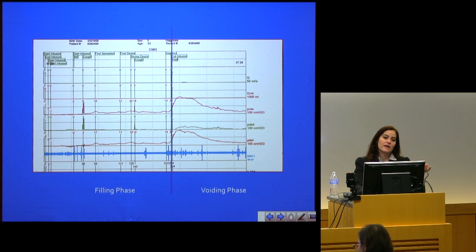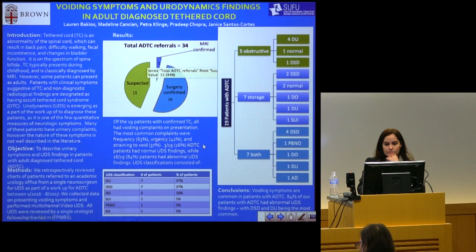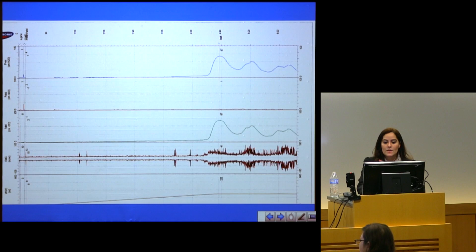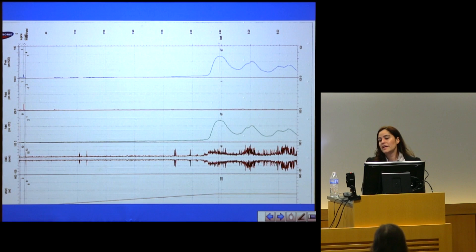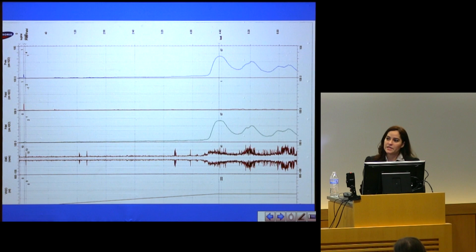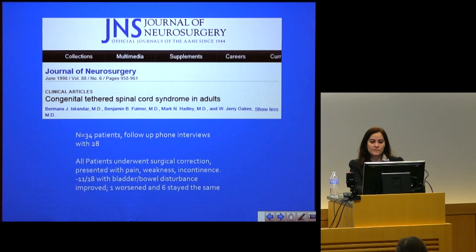In the voiding phase, we look at detrusor muscle pressures during urination, the flow of urine, and EMG activity — which is supposed to relax during the micturition phase. That in a nutshell is what urodynamics is and what we're looking for. Every time we do urodynamics, I like to meet with patients beforehand because you have to formulate a question and know the patient's symptoms, so you can interpret whether the test is diagnostic or, in some cases, non-diagnostic.